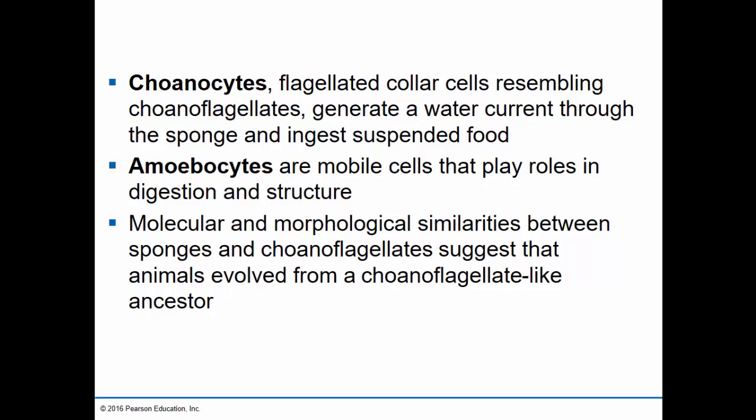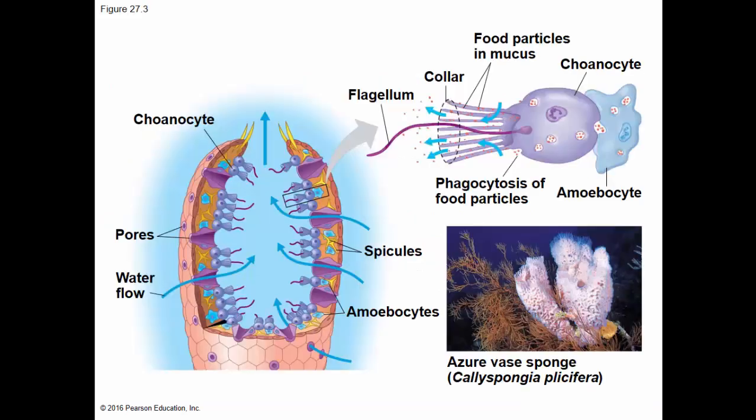These mobile cells move around the body of the sponge and are involved in digesting the food and in the structure of the sponge's body. Both DNA evidence from molecular biology and morphological similarities — those are structural similarities between the sponges and choanoflagellates — suggest that animals evolved from an ancestor that was very much like the modern-day choanoflagellates. If we look at a sponge, we can see these particular cell types, and a picture of a choanoflagellate would be almost identical in structure to this choanoflagellate cell.